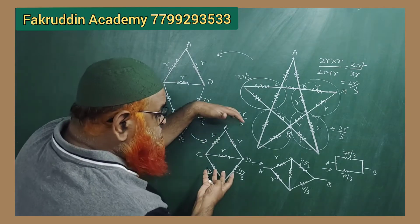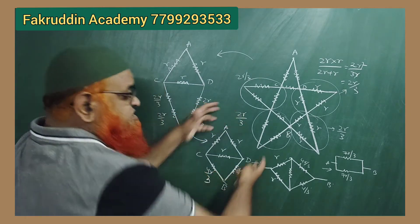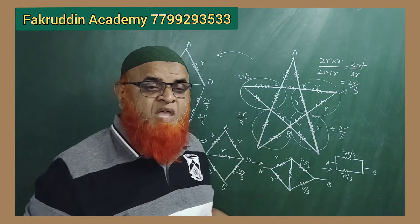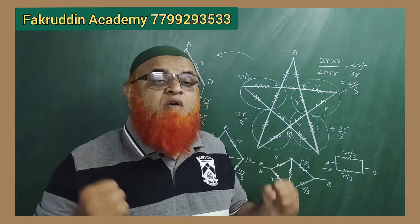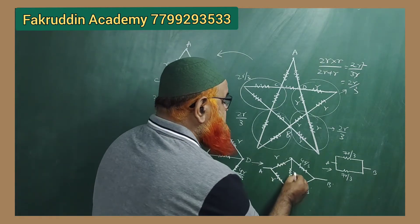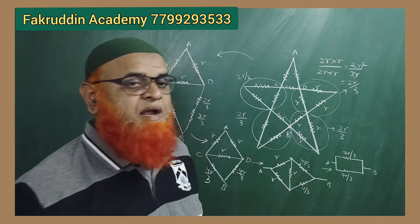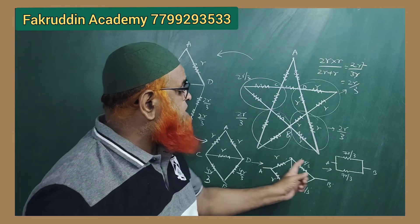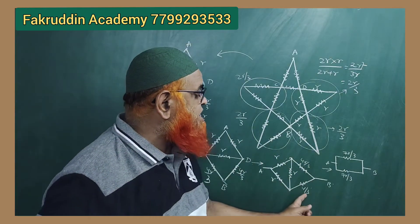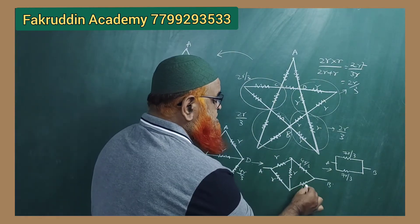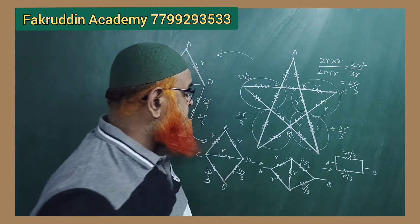Now if you take this Wheatstone bridge and lay it out straight, you can see there is resistance R in the middle. This is a balanced Wheatstone bridge because P by Q equals R by S, so both sides are 4R by 3.